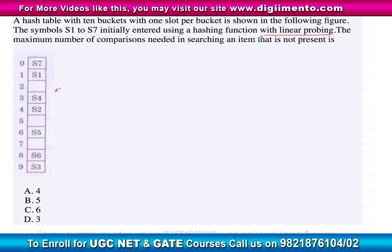Linear probing is a collision resolution technique. If two different keys hash to the same slot, a collision occurs. For example, if slot 2 already contains a value and a new key also hashes to slot 2, we cannot place two keys in the same slot — this is a collision.